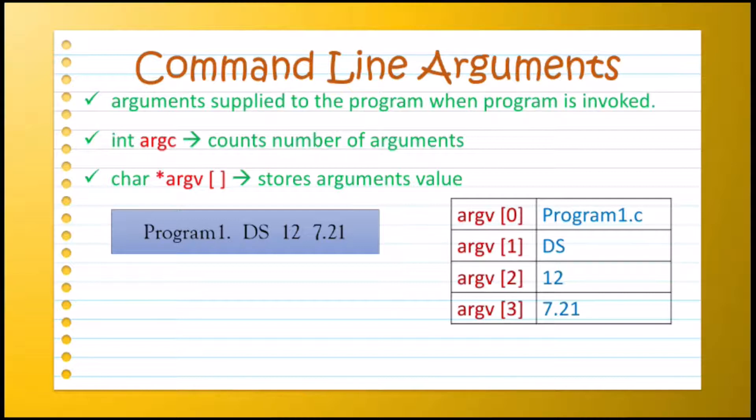Next argument, that is DS, will be stored in ARGV[1]. Next argument, that is 12, will be saved in ARGV[2].